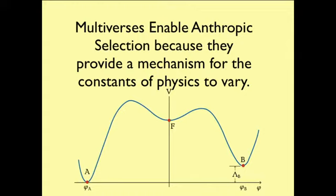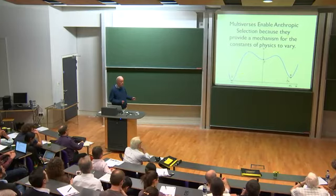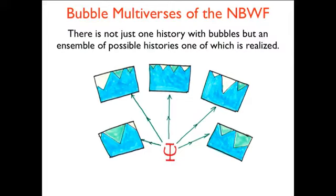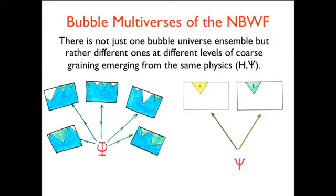As I think was first emphasized by Bernard Carr and Martin Rees, multiverse ideas are a very powerful idea because they enable anthropic selection because, as in this case, they enable the constants to vary. One value of the cosmological constant here, another one over here. So there's not just one history with bubbles, but an ensemble of possible histories. It's a multiverse of histories at a given level of coarse graining. But it's much better than that, or much worse than that. There are multiverses that exist in different levels of coarse graining, as in the ones through which we calculated the Coleman-De Luccia probabilities, which are very simple.